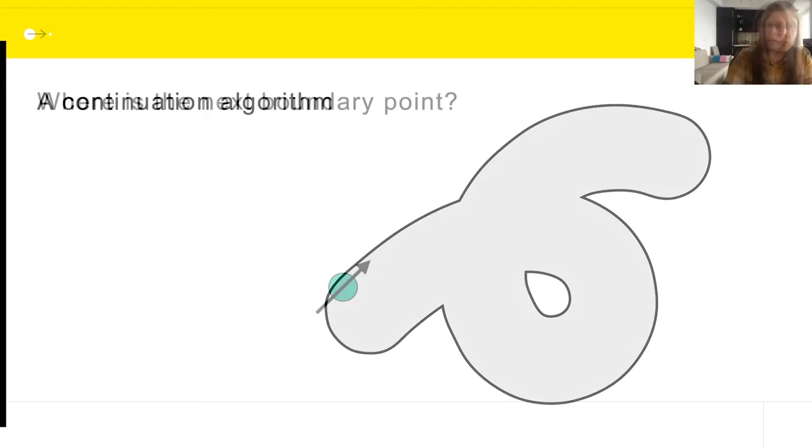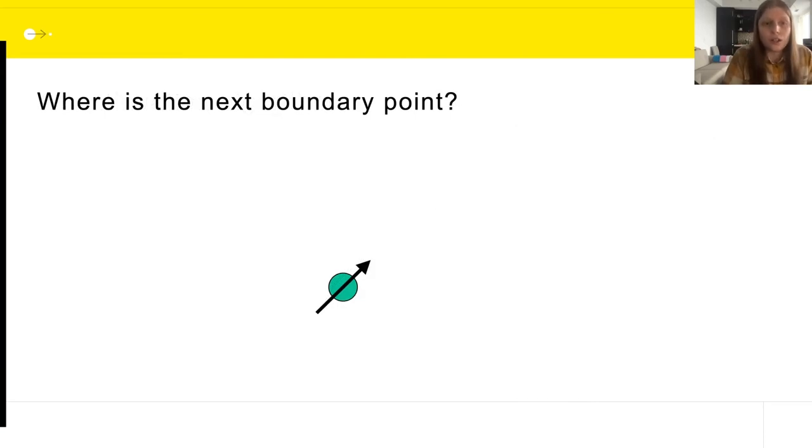In the literature, this general type of algorithm where we slowly trace the boundary of a shape is called a continuation algorithm. There is an issue though, even if I know all the information about this green point and about its minimizer and where T star is for this green point, it's impossible for me to know the direction in which the boundary continues. And I would like to just stick to the boundary because I know computing the boundary is a good way of representing the whole swept volume, and it seems like computing values of f that are far from the boundary seems a little bit wasteful, right?